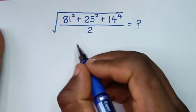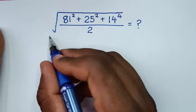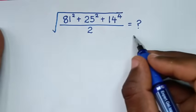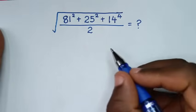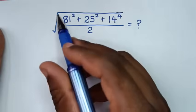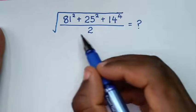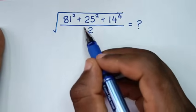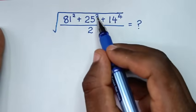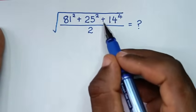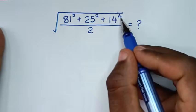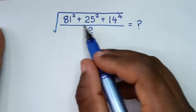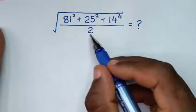Hello, you are welcome to solve this math problem: find the value of square root of 81 squared plus 25 squared plus 14 to the power 4, all over 2.